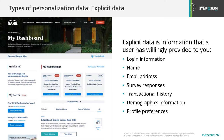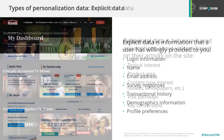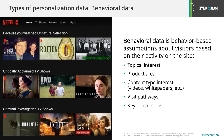Sitecore has no explicit data out of the box. Explicit data requires the user to willingly provide information such as by creating an account or submitting a form. Explicit data can include login information, name, email address, survey responses, etc. Behavioral data is data gathered on the user's activity on the site. It can be tracked for anonymous or known visitors and can include basic visit information, behavioral profiling, and goal or event outcome conversions. An example of behavioral data is streaming services making recommendations based on shows that a user has previously watched.